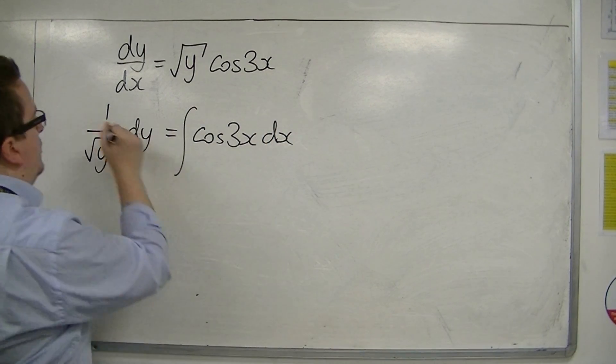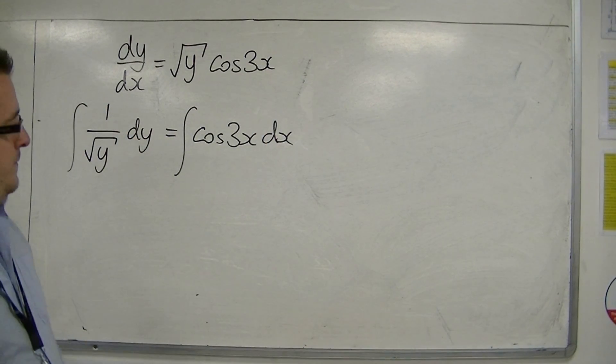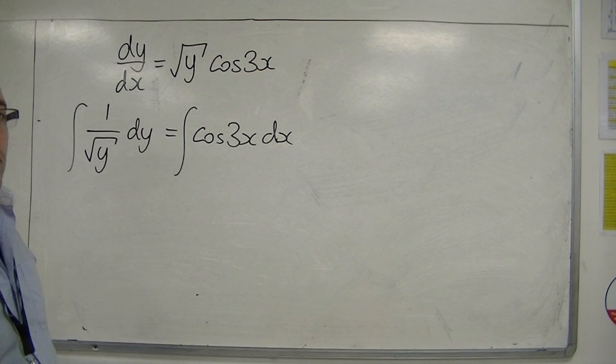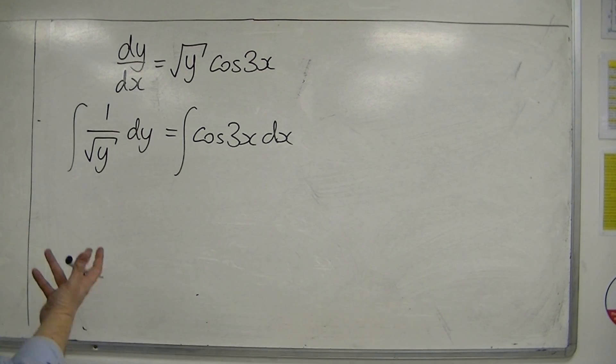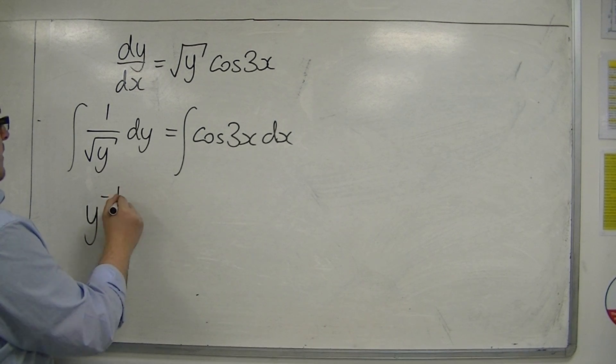We're going to integrate both sides. Now the left-hand side is currently in a format that I don't particularly like working with. 1 over root y is 1 over y to the half, so that's y to the minus a half.